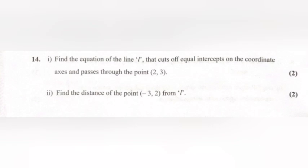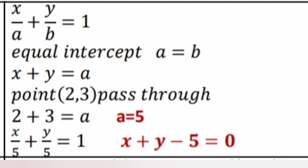Problem 14, Question 1. Find the equation of the line L that cuts off equal intercepts on the coordinate axis and passes through the point (2, 3). Answer: x/a plus y/b equal 1; equal intercept means a equal b, so x plus y equal a. Point (2, 3) passes through: 2 plus 3 equal a, so a equal 5. Therefore x/5 plus y/5 equal 1, giving x plus y minus 5 equals 0.